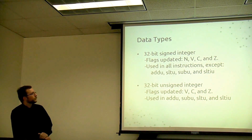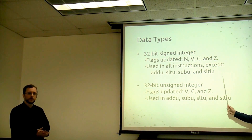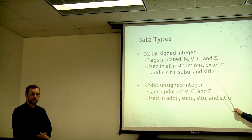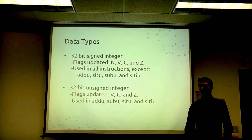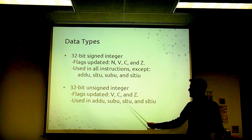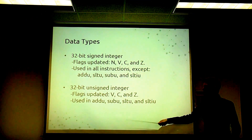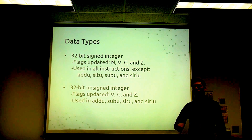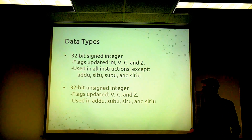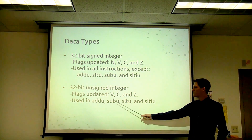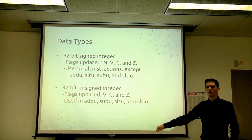We have two main data types: a 32-bit signed integer, which will update the negative, overflow, carry, and zero flags — used mostly in arithmetic operations. And a 32-bit unsigned integer, which will only update the overflow, carry, and zero flags, since we don't care about the negative flag. This is only used in the add, subtract, set less than, and set less than immediate unsigned operations.